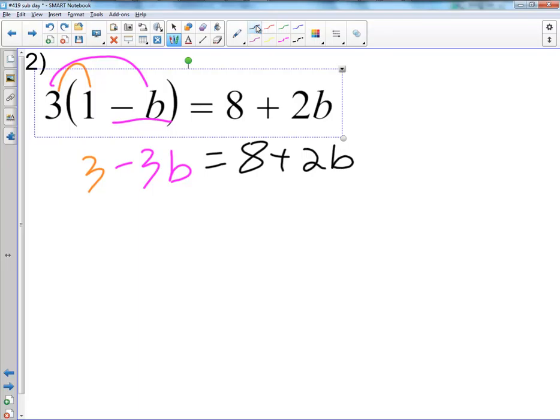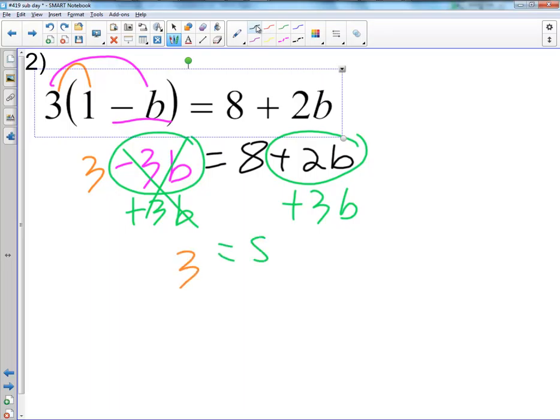Next, we have circle the variables. I have variables on both sides. Notice I'm circling with the signs in front because that's what matters. Where do I have more variables? On the right, where the positive variable is at. So I'm going to take care of the one on the left. I'm going to do the opposite which means add 3b. These are going to cancel out. I'm going to bring down the 3. Equals 8 plus 2 plus 3 is 5b.